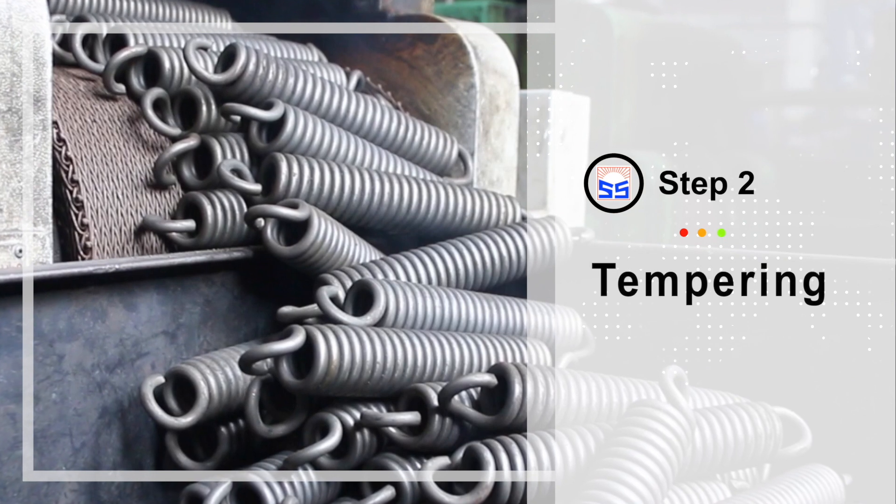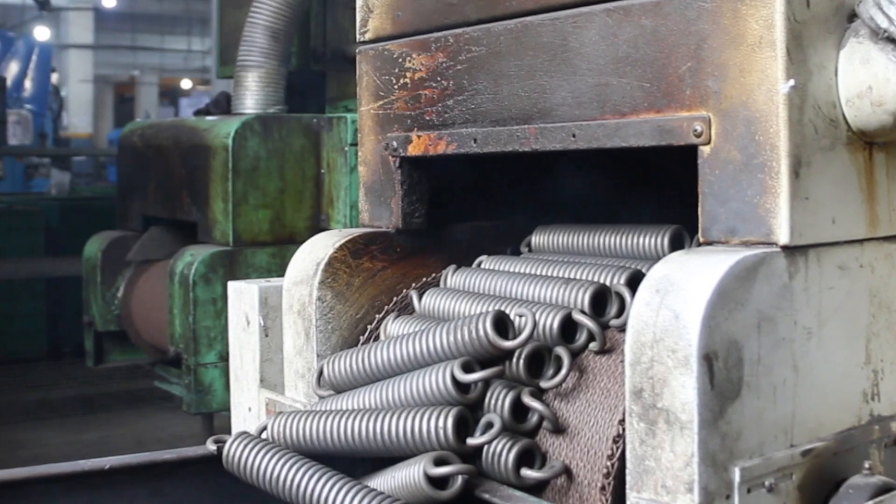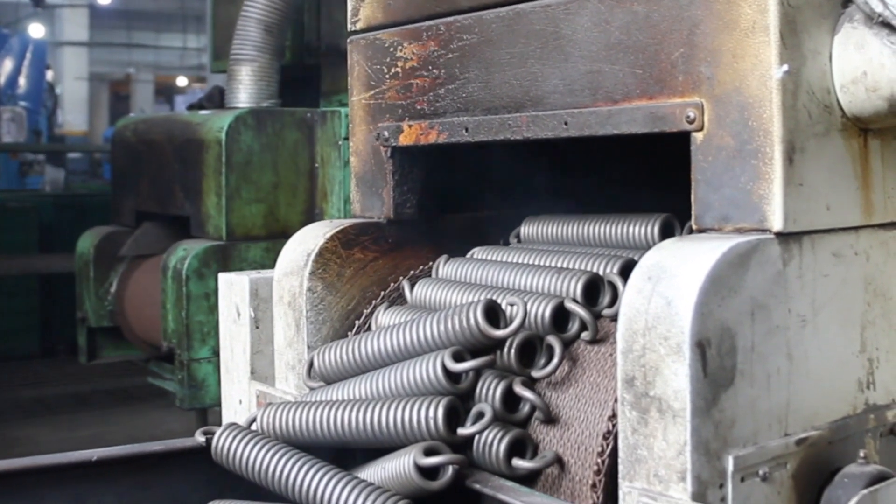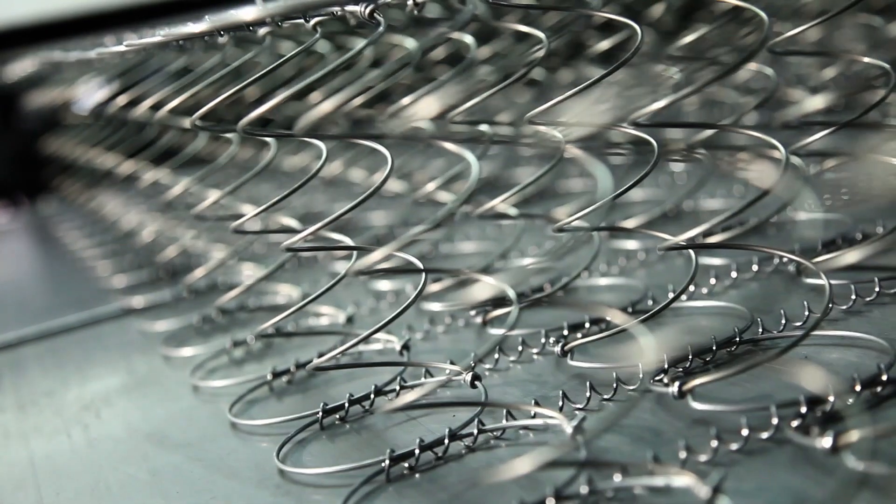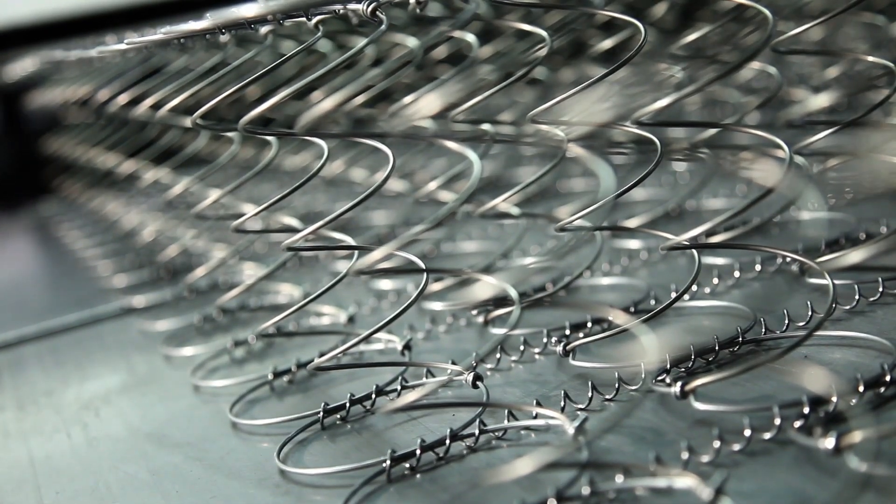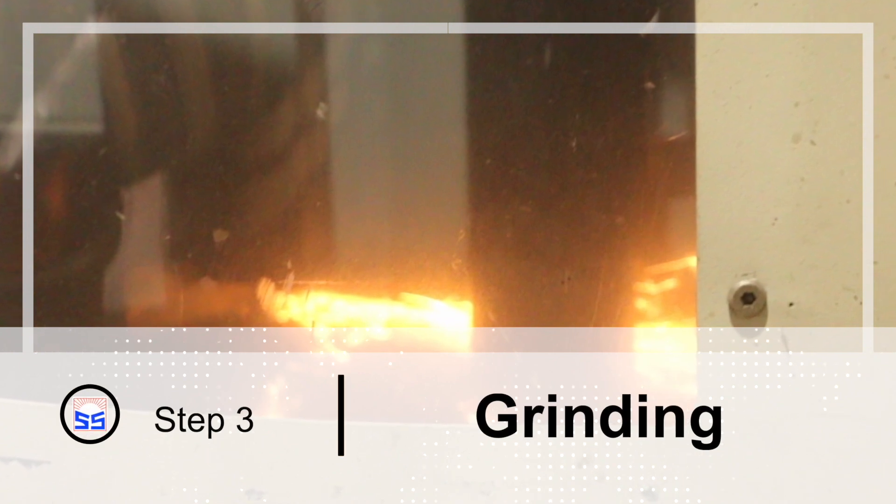Step two: tempering. After coiling, the springs are transferred to a tempering furnace where they're tempered at over 280 degrees Celsius for approximately 20 minutes. This stress relieves the surface of the wire, making it more durable and less prone to fatigue.